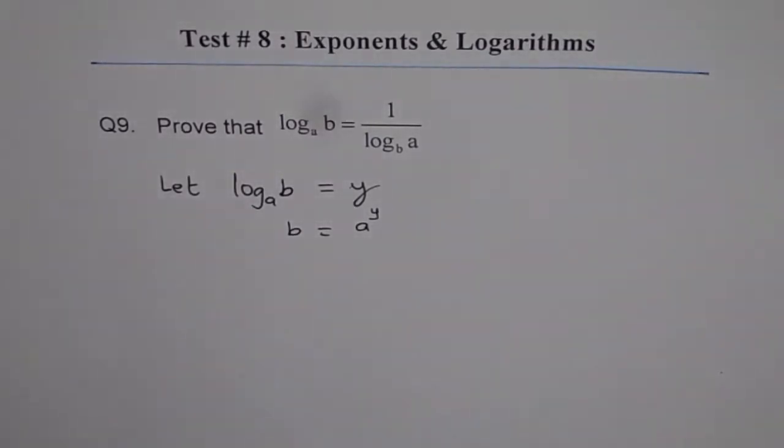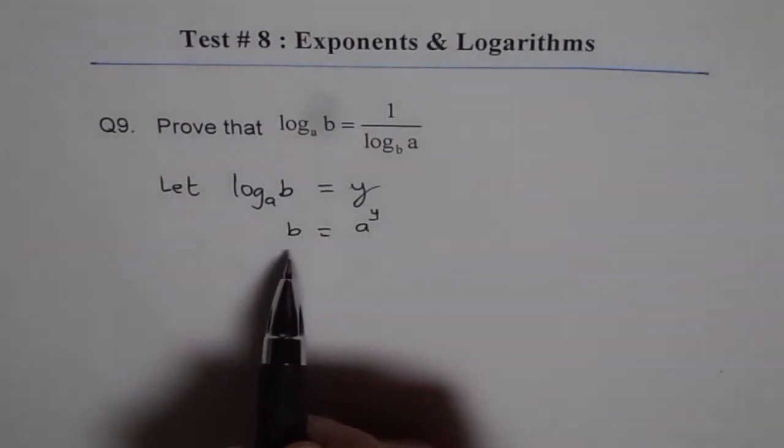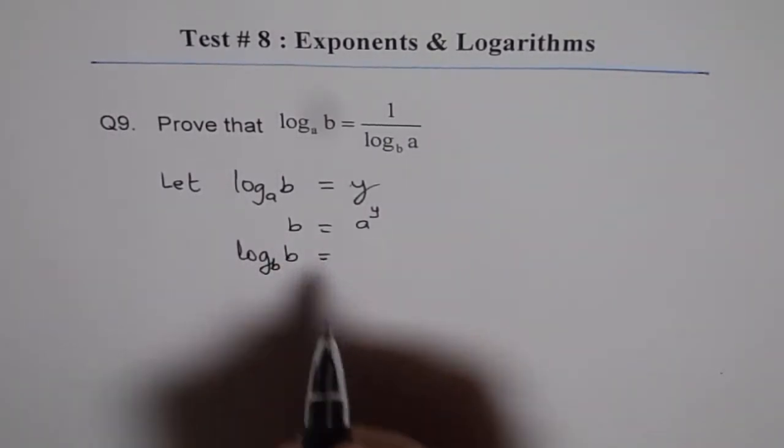Now what we will do is we will revert back to the logarithmic form but with change of base. So that is the trick. We will change the base to b. So let us take log to the base b of b on both the sides.